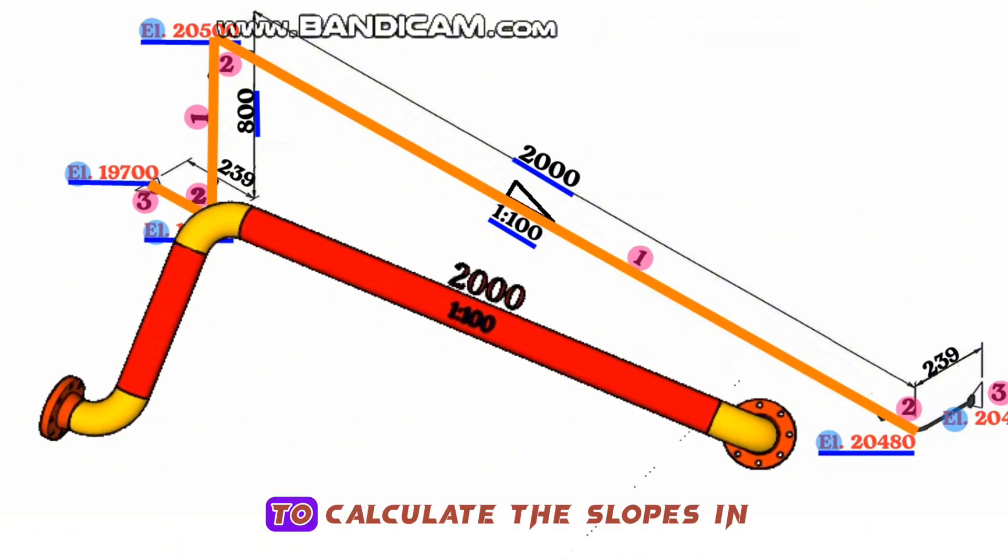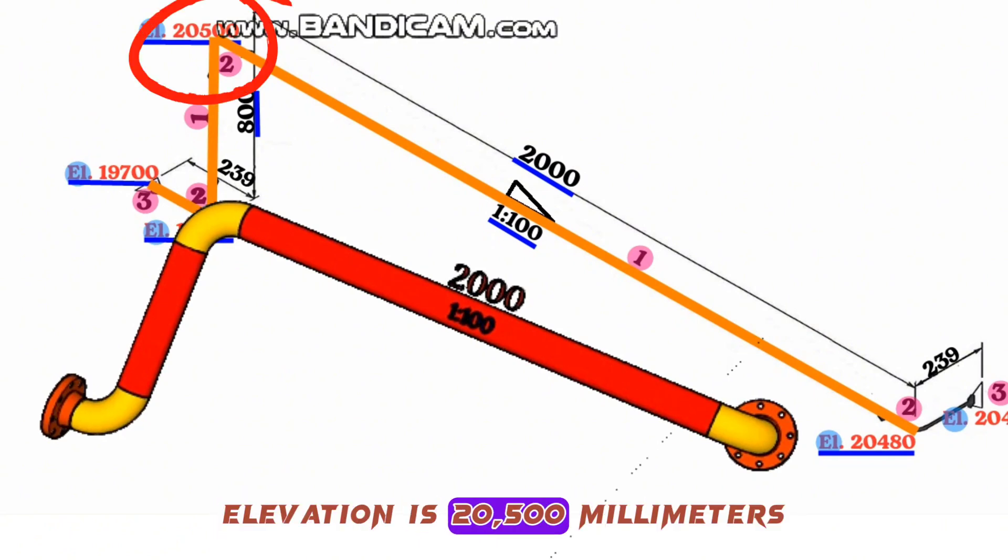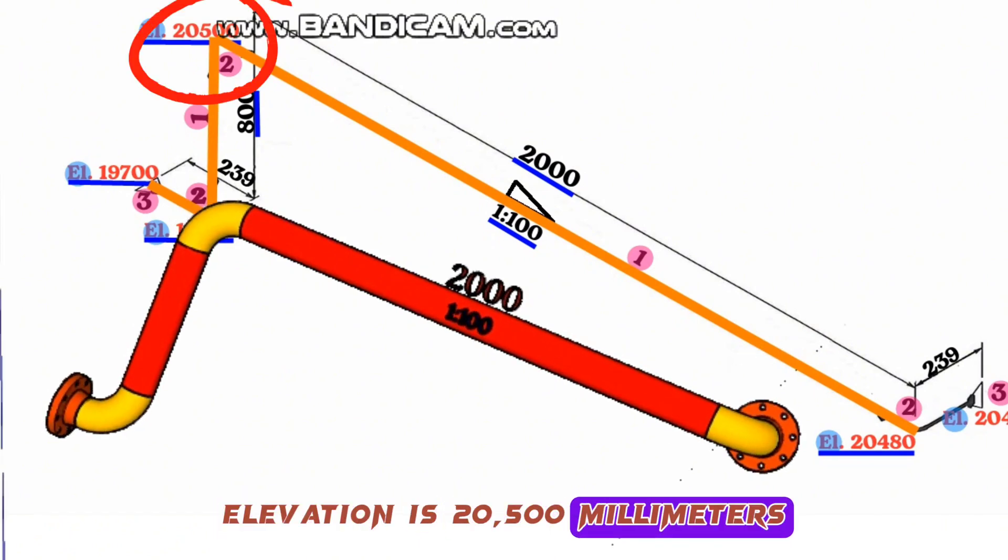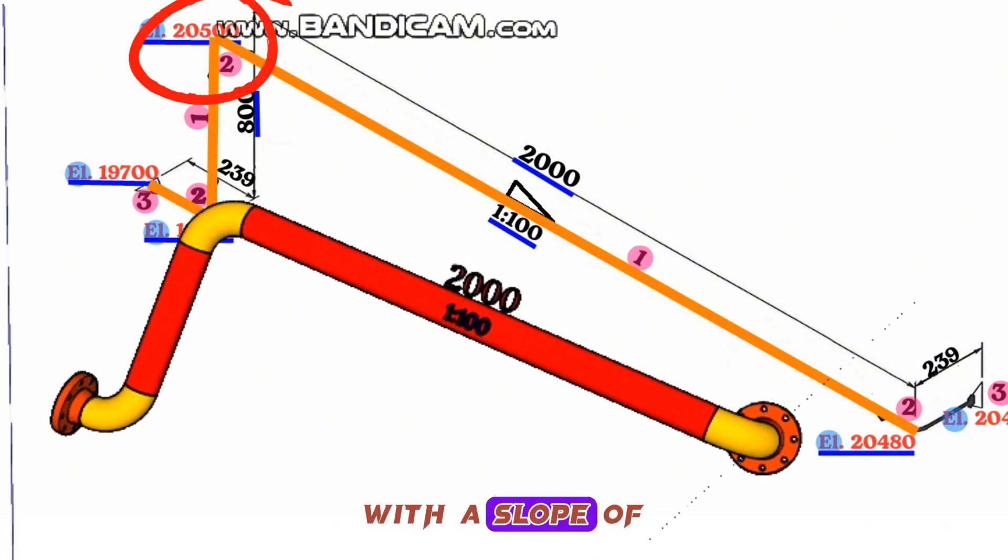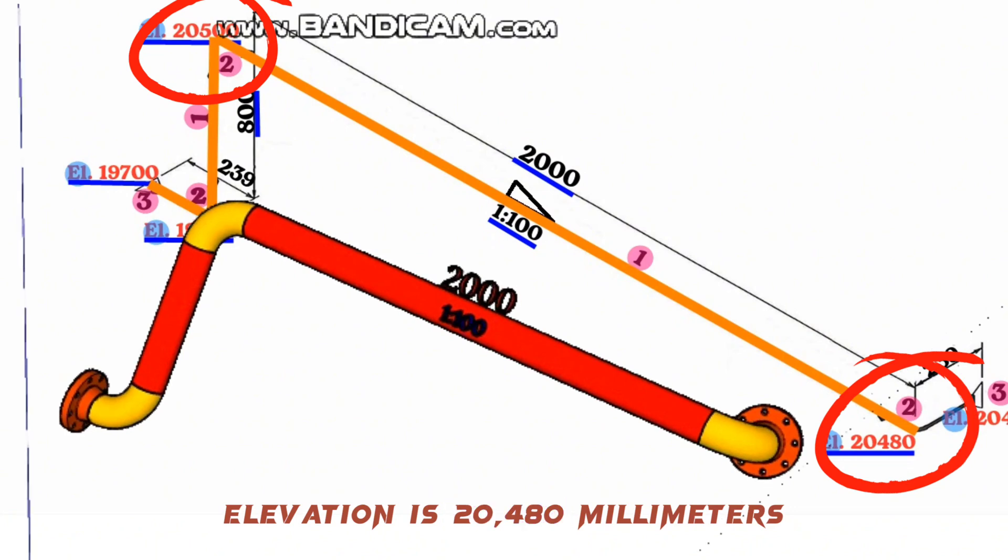It is also possible to calculate the slopes in the pipelines with the elevations showing at the turns in the pipeline. In this piping isometric drawing, the initial height of the pipeline elevation is 20,500 millimeters, and the height of the pipeline at the second turn with the slope of 1:100 elevation is 20,480 millimeters.